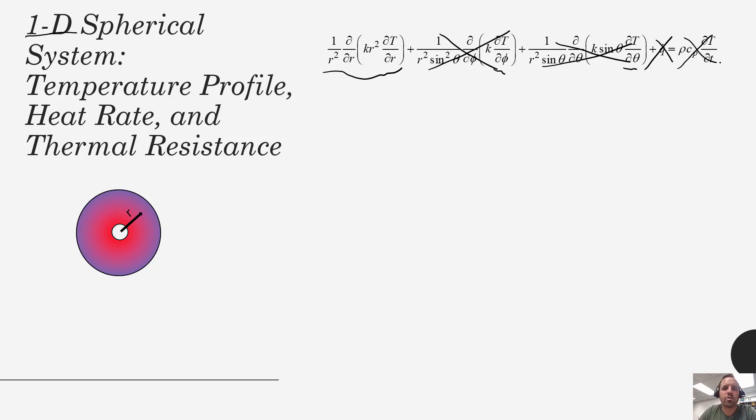The way we would analyze the system is we would take this form of the heat equation, we would integrate and solve using our boundary conditions to get the constants of integration. So the boundary conditions here would be we know the temperature on the inside of this wall TS1 at r equals r1, and then here we have TS2 at r equals r2.